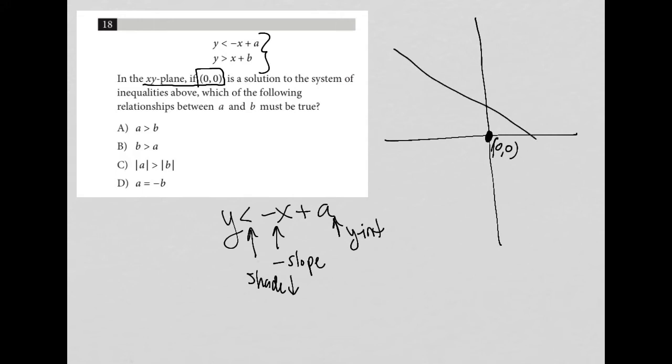I'm going to call this a, and I'm going to shade down. And by doing so, I capture that (0,0) as a solution.